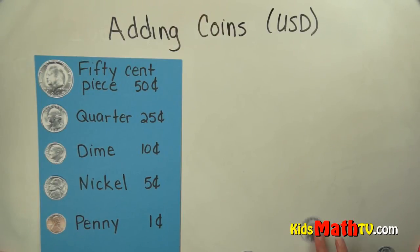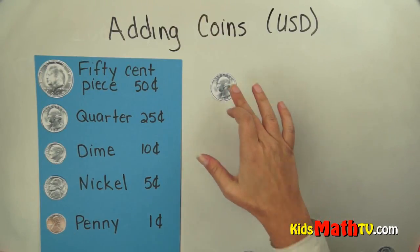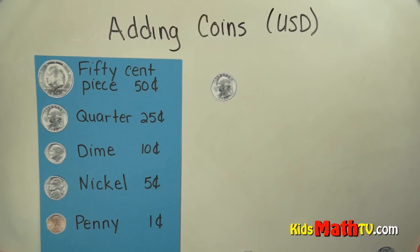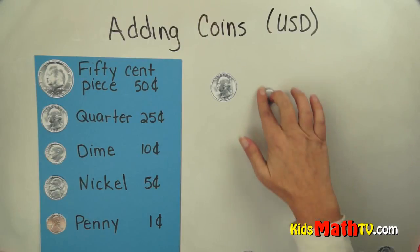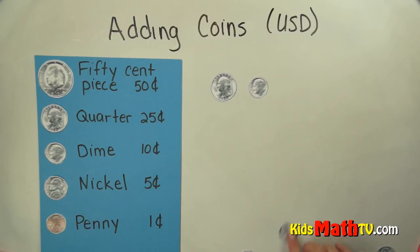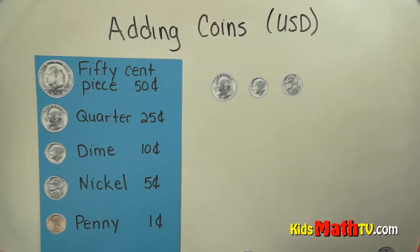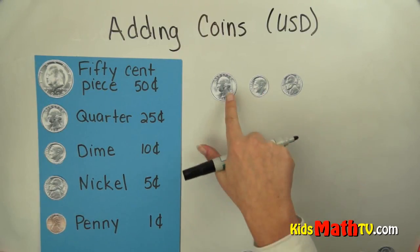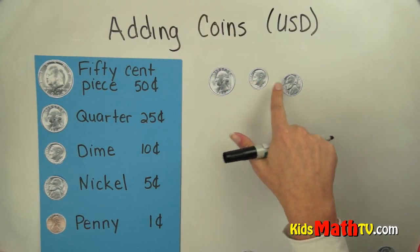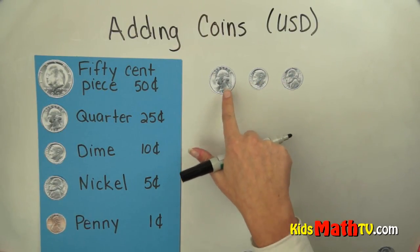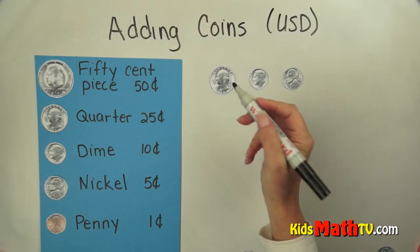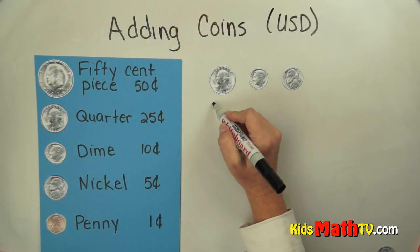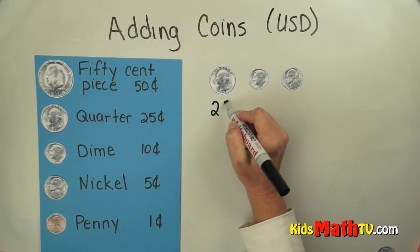So if I put some coins out here — here is a quarter, a dime, and a nickel. So if we wanted to add together a quarter, a dime, and a nickel, I like to put them — you can do it in any order you want. Let's start with this one, which is worth 25.